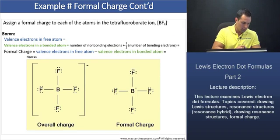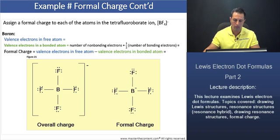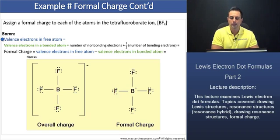Now for boron, let's find the number of valence electrons in a free atom. Boron is a main group three element, thus a neutral boron atom has three valence electrons. The valence electrons in a bonded boron atom: boron does not have any non-bonding electrons. However,